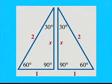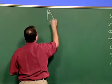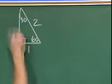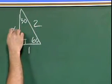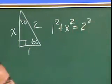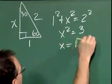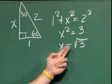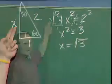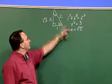We can find the missing side x by using the Pythagorean theorem. We have a 30-60-90 right triangle where one leg is 1, the hypotenuse is 2, and the other leg is x. Setting up: one squared plus x squared equals two squared. That means x squared equals four minus one, so x equals the square root of three. We take only the positive root because we're dealing with the length of a side. Our triangle has sides of 1, square root of 3, and 2.